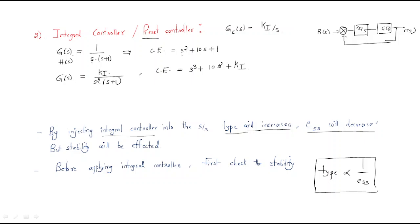If you observe the characteristic equation, the original system s² + 10s + 1 is a stable system. But the new characteristic equation s³ + 10s² + ki is missing the s¹ term. That's why the system becomes unstable.